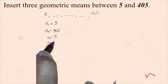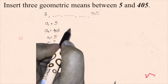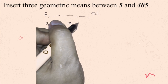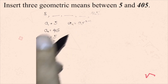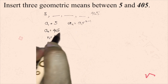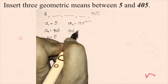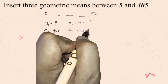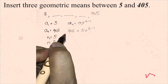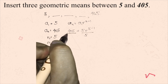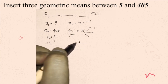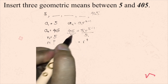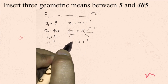We will find the common ratio. Using the general term: a sub n equals a sub 1 times r raised to n minus 1. Substituting: 405 equals 5 times r raised to 5 minus 1. Dividing both sides by 5 leaves r to the fourth power, and 405 divided by 5 is 81.